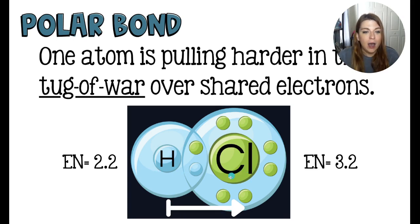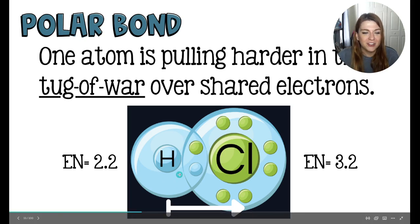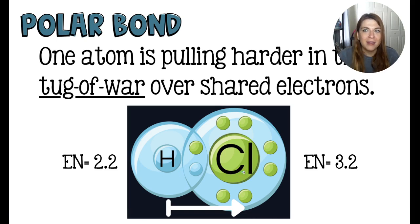So the hydrogen is going to have its electrons kind of stolen from it. Not exactly. Borrowed without asking, let's say. So hydrogen's electrons are borrowed without asking, and chlorine is going to hog them. So chlorine is going to wind up being the negative region of this bond.